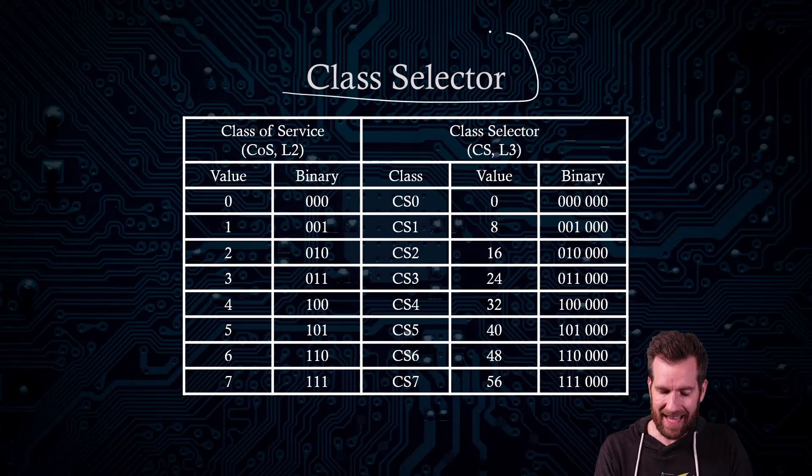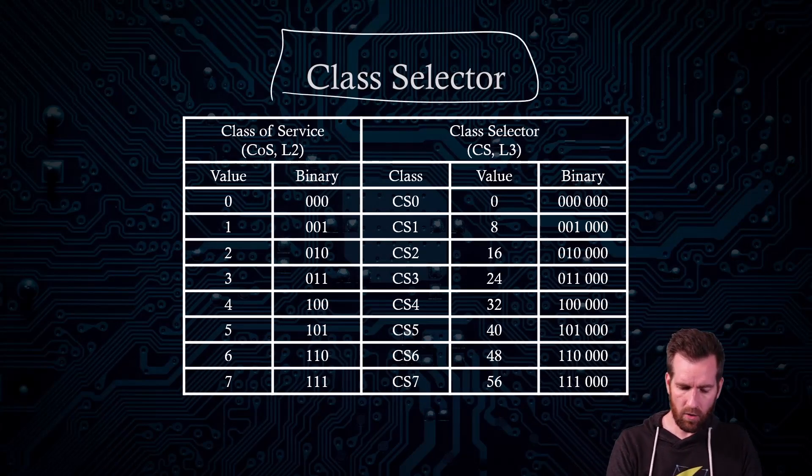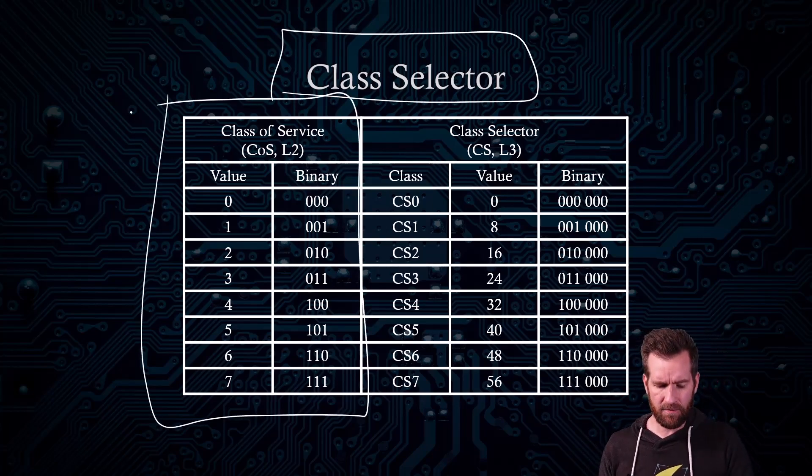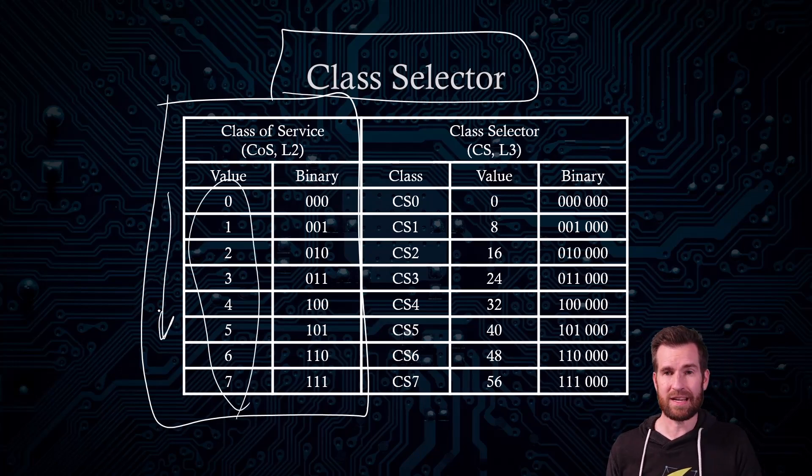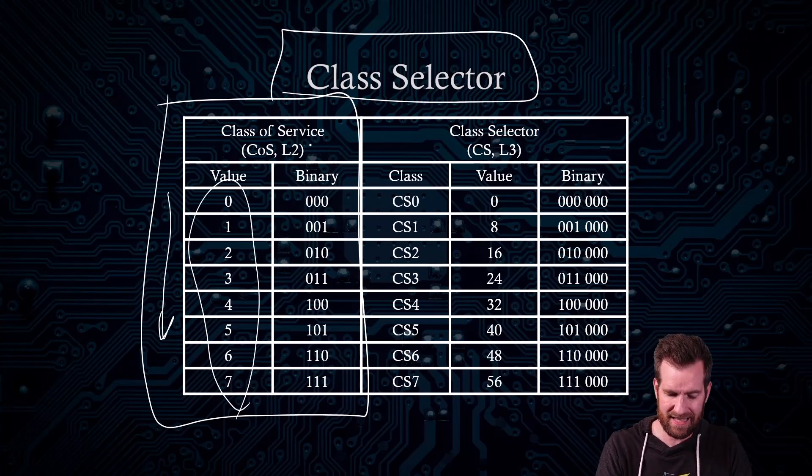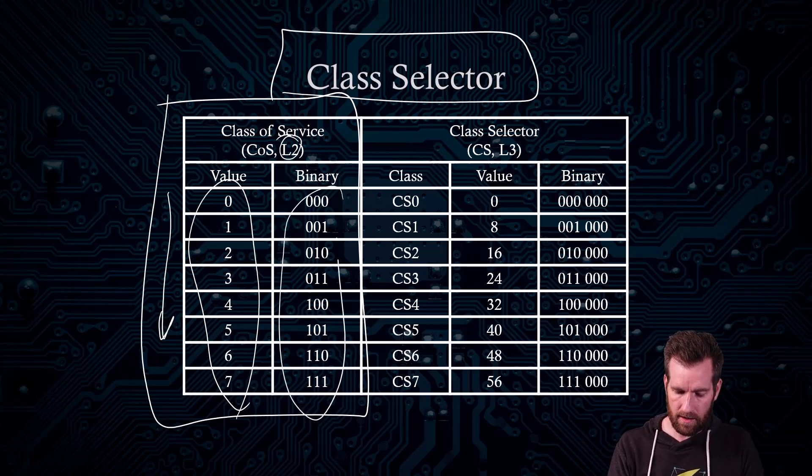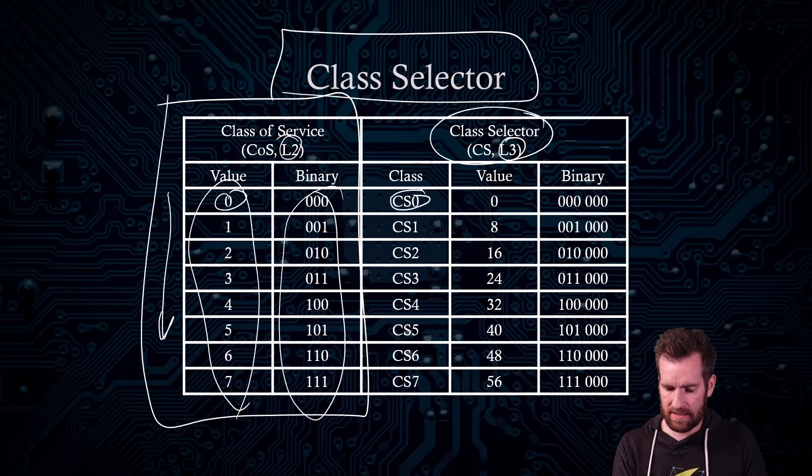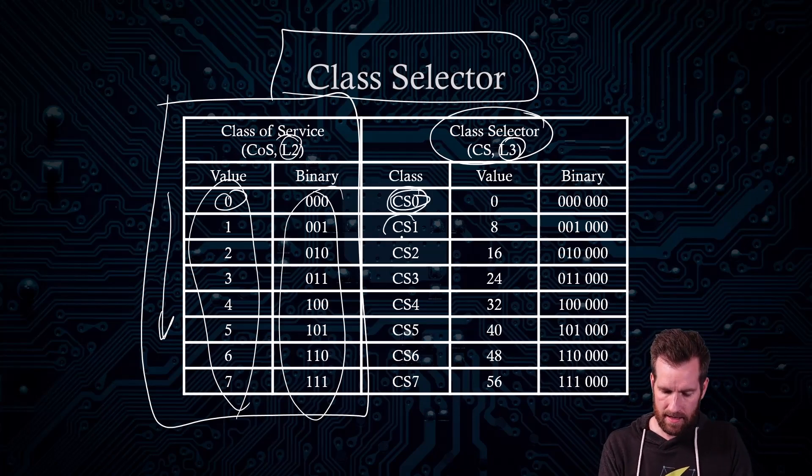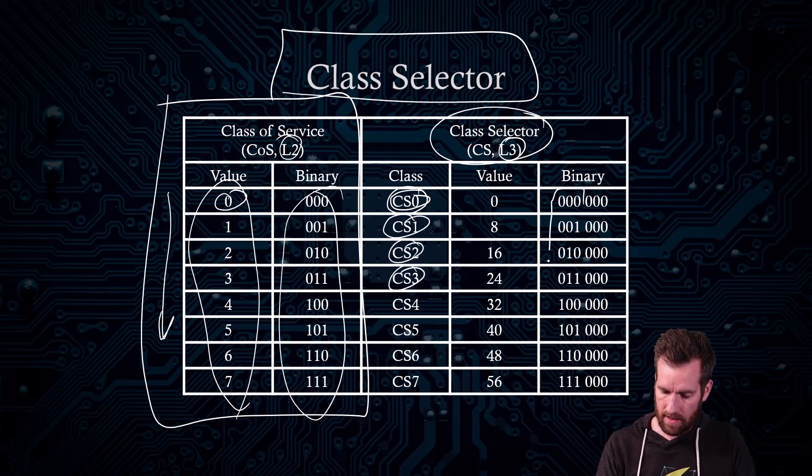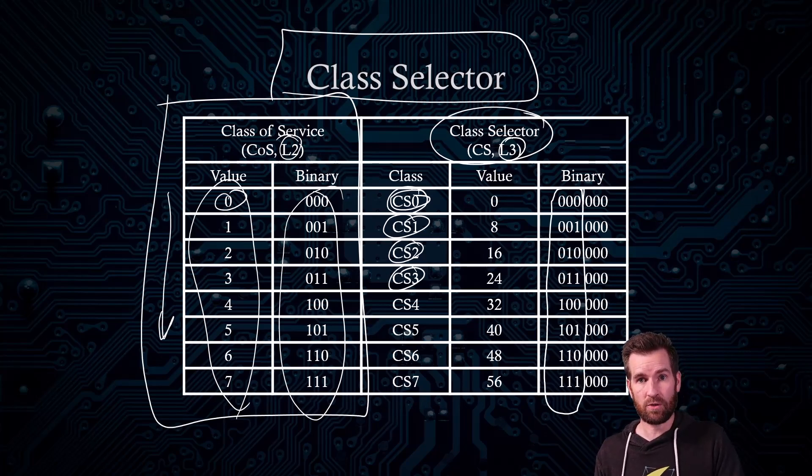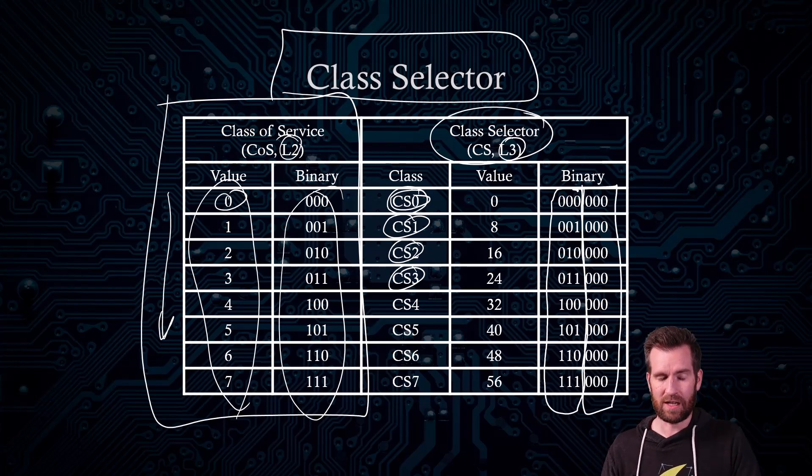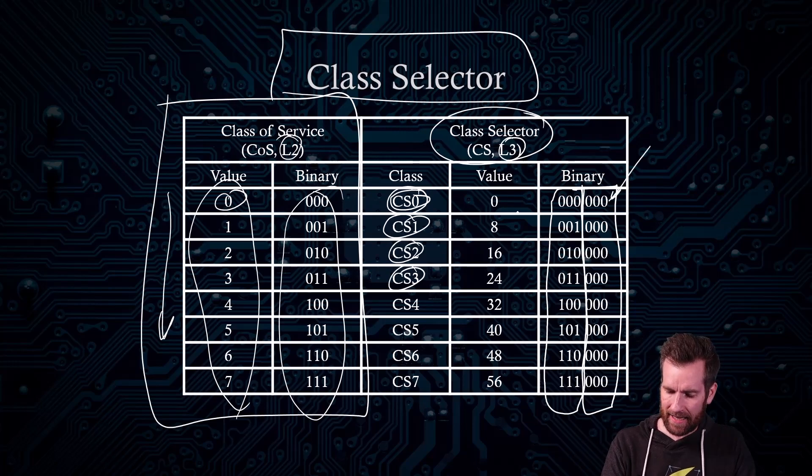So let's get more in-depth into the class selector. The class selector is directly correlated with that class of service, something we went over in our last video. And we talked about the values and how, as the values increase, so does the priority of that frame that's involved. Because this is layer two, remember. And the binary, here's the binary equivalent of those values right there. So then we have the class selector, which is layer three. And we've said it's directly correlated. So we see that a value of zero in the class service is a CS zero in the class selector. And CS one, CS two, CS three, the binaries all line up exactly the same as well, at least the first three bits. We do add this second set of zeros to it. We're not really utilizing them.